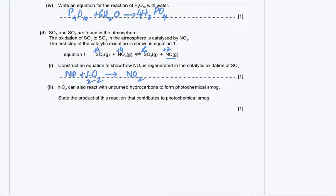Part D2: nitrogen dioxide can also react with unburned hydrocarbons to form photochemical smog. The product of this reaction that contributes to photochemical smog is peroxyacetyl nitrate. This is theory you need to know before your exam.